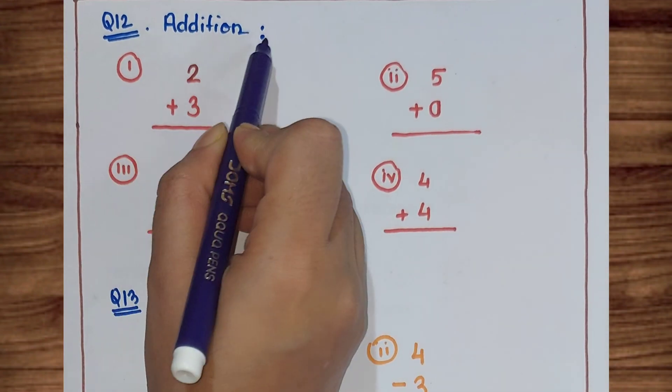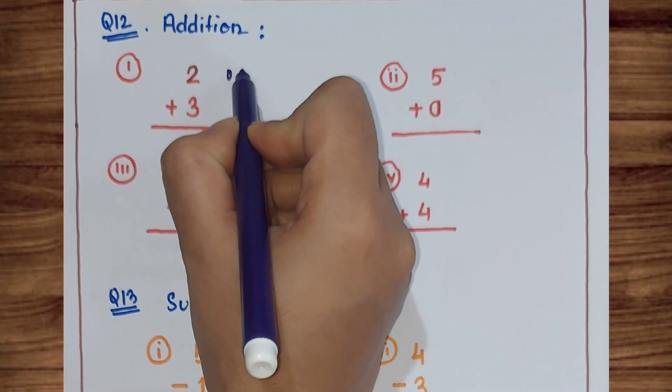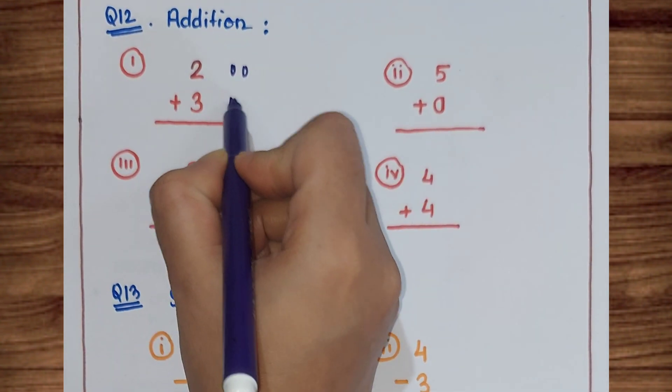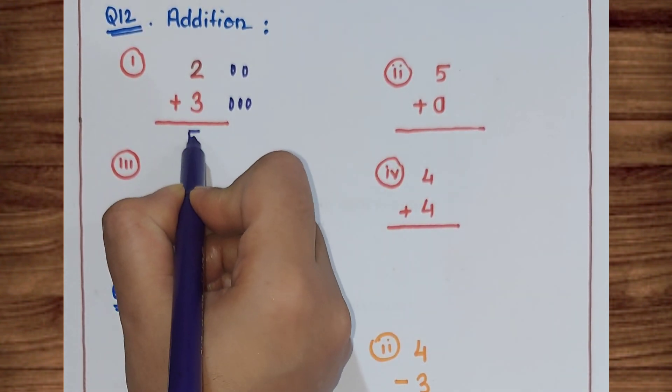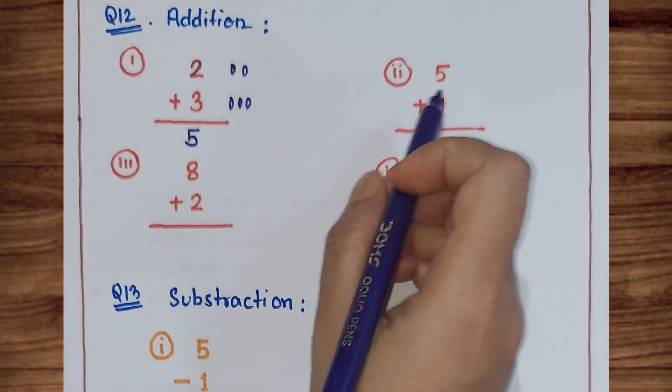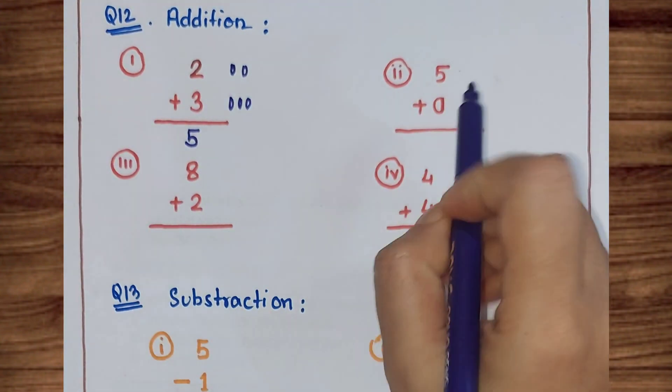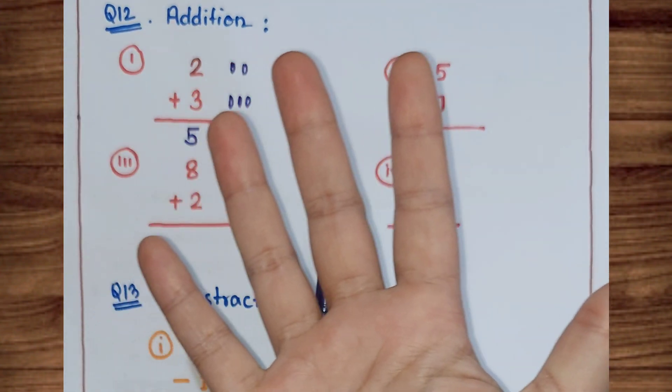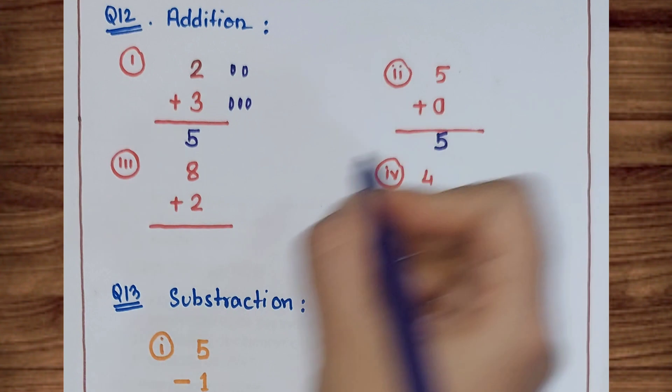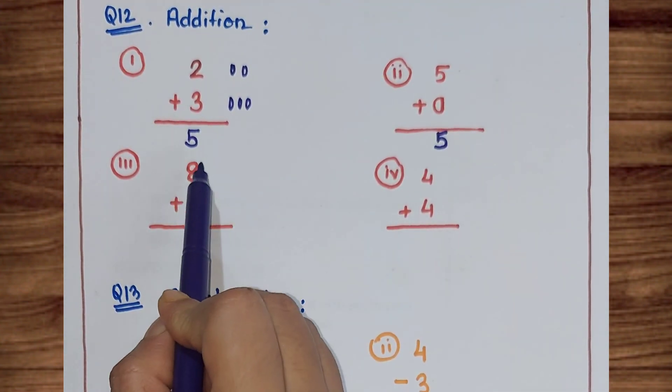Next question is addition. Here we will draw objects next to the numbers, then count them and find the total. This is one method. Next method: we will do it using fingers. Five plus zero equals how much? Five. Next, eight.